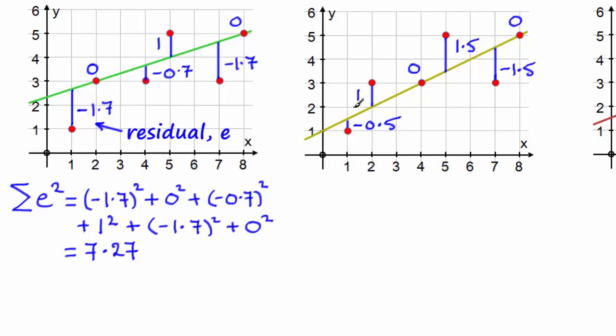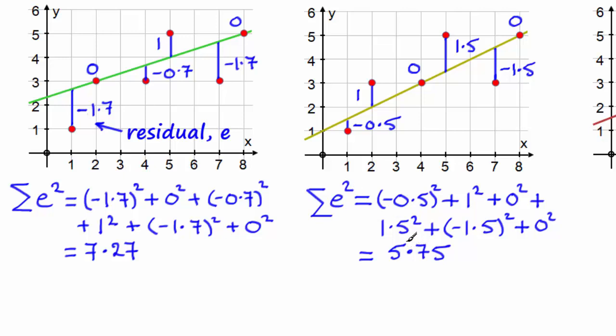Is this line a better fit then? Well if you do the sum of the squares of those residuals, what we end up with is 5.75. So yes, this is a closer line, a better fit line if you like, than this one here.